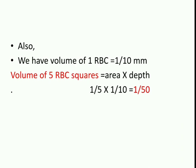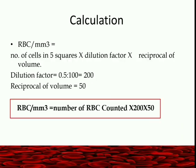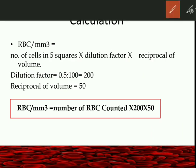The volume of one RBC square is 1/10 mm³. The volume of 5 RBC squares is area × depth, giving 1/50 mm³. The main formula is: RBC per mm³ of a given sample equals the number of cells counted in 5 squares (N) × dilution factor × reciprocal of volume. So: N × 200 × 50. The final formula is: number of RBCs counted × 200 × 50.